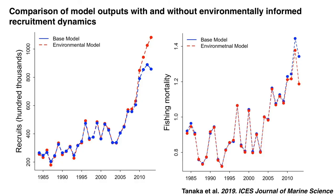What we found is that when we incorporated what we call the climate change impact on lobster life histories, two interesting things happened in the key outcomes of the stock assessments. One is recruitment — the number of fish coming into the fisheries — was actually much higher than what we thought before we incorporated the change in temperature or salinities. At the same time, fishing mortality — the rate of fish removal due to fishing — was actually slightly lower, just because there are more fish coming into the fisheries. So these are interesting findings.